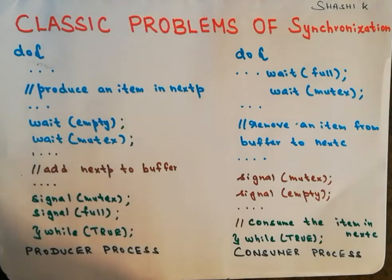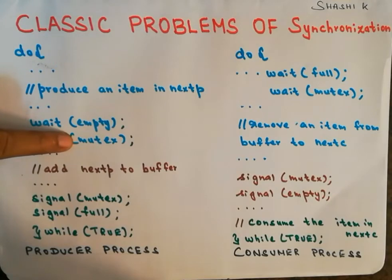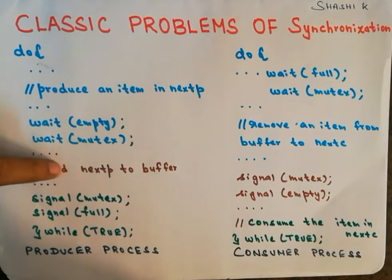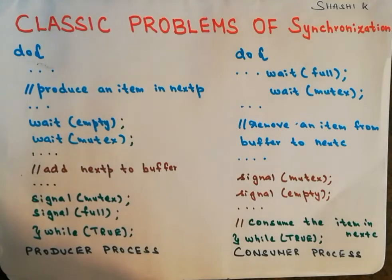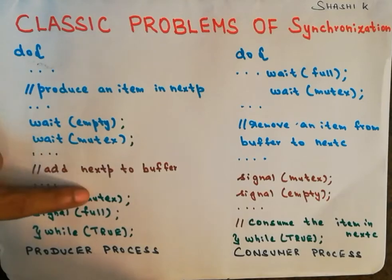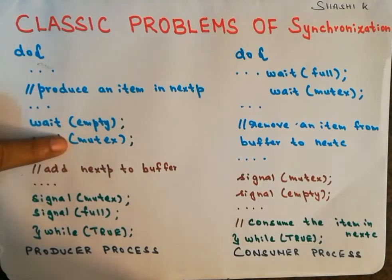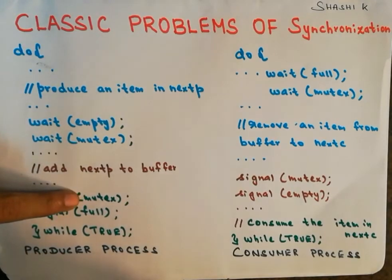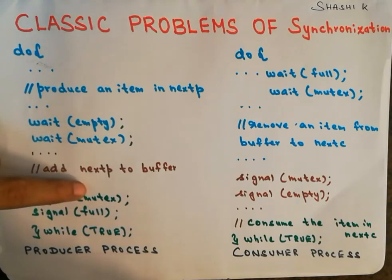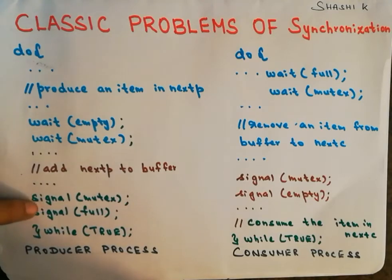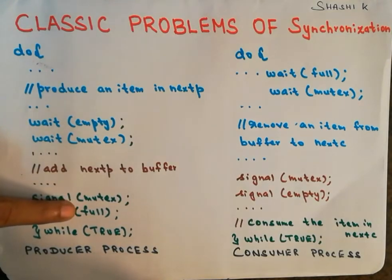When mutex's value is 1, the wait operation decrements it to 0, meaning the producer process enters the critical section. It then adds the next produced item to the buffer. After finishing in the critical section, it executes the signal operation on mutex, incrementing it back to 1. After that, it executes the signal operation on the full semaphore, indicating the number of full buffers has increased by 1 because the producer has produced one item.